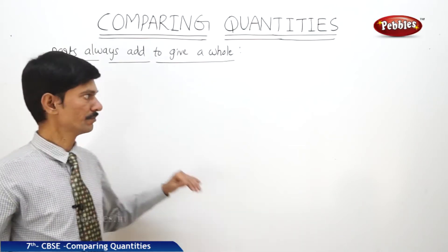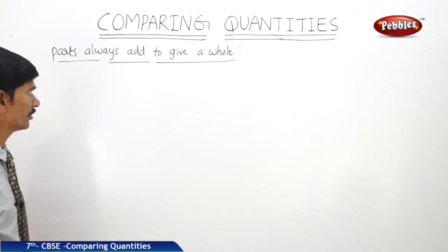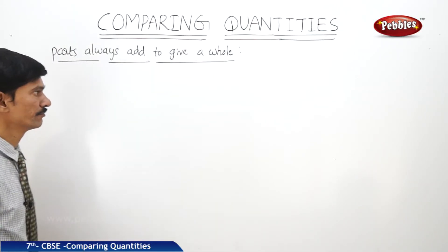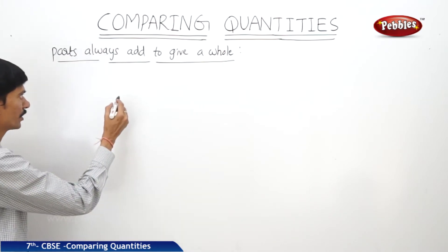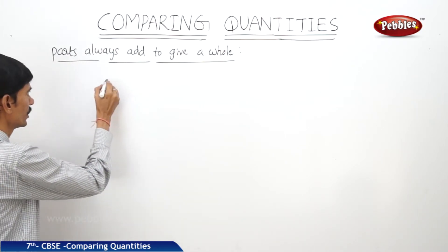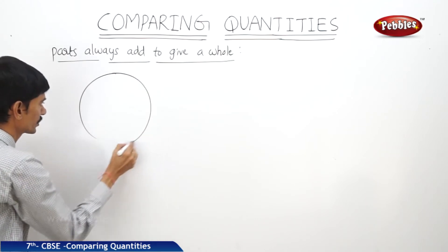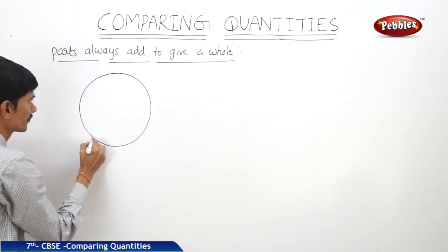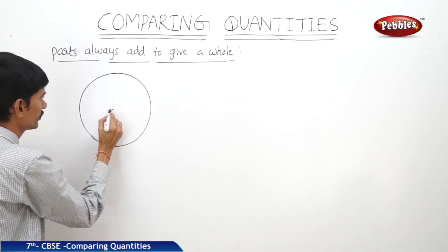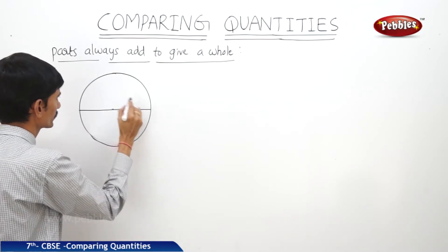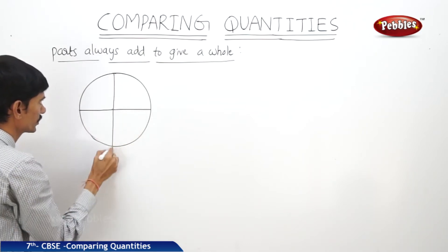Let us see the next topic. Parts always add to give a whole. How are the parts added to give the whole? Let us see with an example. Consider a circle with center O and divide the circle into 8 equal parts, meaning 8 sectors.